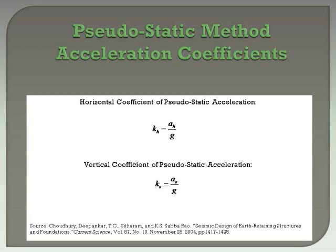Before we look at the different pseudo-static methods, one thing that is common to all these methods is the coefficients of pseudo-static acceleration. They are determined by dividing the horizontal and vertical acceleration by the acceleration of gravity. The coefficient of vertical acceleration can be taken as zero for analysis.